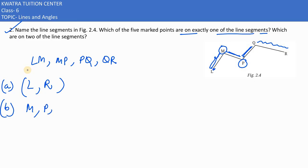For two line segments, we can write the answer: points M, P, and Q are there.